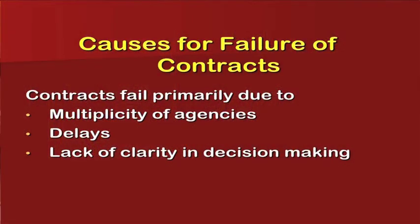Causes of failure of contracts: Contracts fail primarily due to multiplicity of agencies, delays, lack of clarity in decision making. In spite of contracts being made efficiently, in spite of all legal advice sought, contracts do fail in market. That is why you see lot of litigation in high courts which is impacting not only the public but also the business and government in terms of the cost incurred.